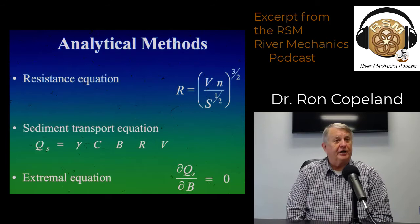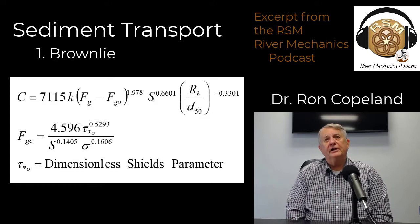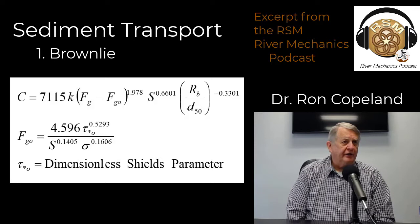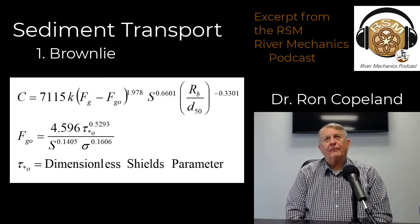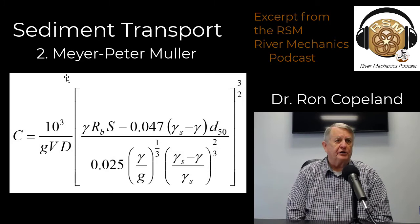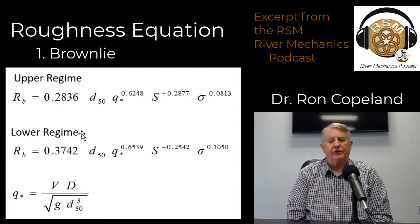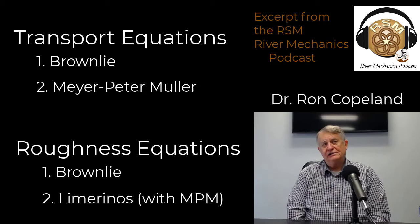One equation is a sediment transport equation and one is a roughness equation. In this method, we use the Brownlee equations for sediment transport because they account for bed forms in a sand bed stream. We also use the Meyer-Peter equation for gravel bed streams, and you can choose which one to use. For roughness, we use Limerinos for gravel bed streams and Brownlee for bed forms in sand bed streams. Those are the equations we chose.